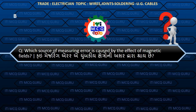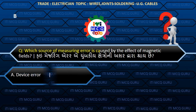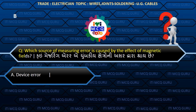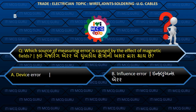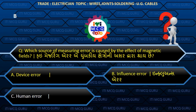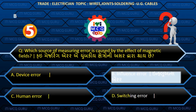Which source of measuring error is caused by the effect of magnetic fields? (Chumbaklya kshetro ni asar dwara kayee measuring error thai chhe?) Answer B: Influence error.